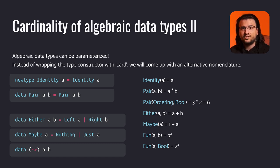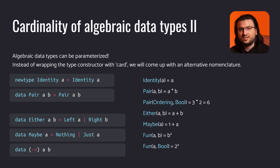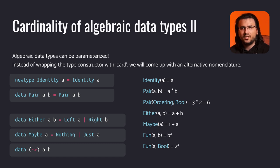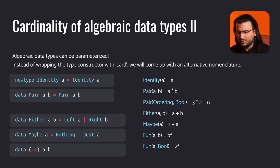Let's use the following notation: we write our type constructor, then in parentheses we list the type parameters, and after the equals sign we specify the mathematical expression denoting the cardinality of the type in question. We can treat these expressions as mathematical representations of those types. Our next example is a pair — it accepts two type parameters and represents the basic case of a product type. Its cardinality is equal to the product of the cardinalities of types a and b.